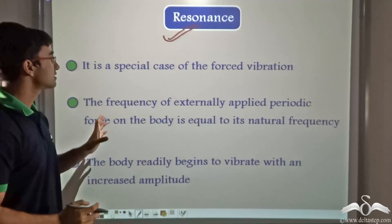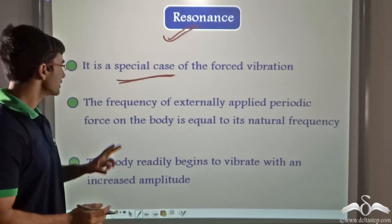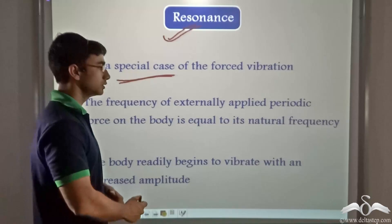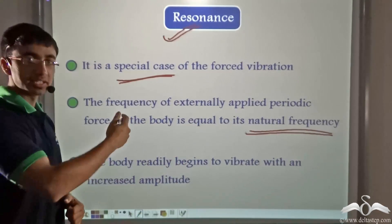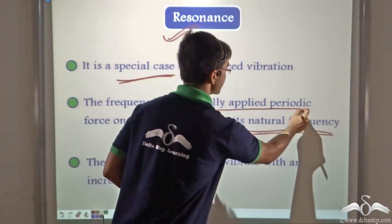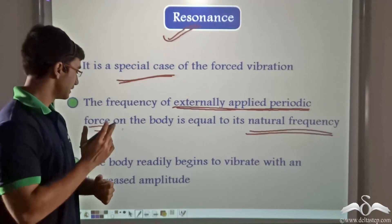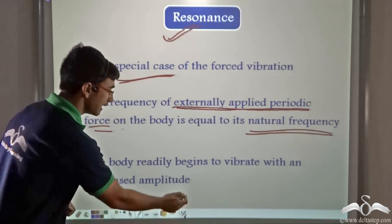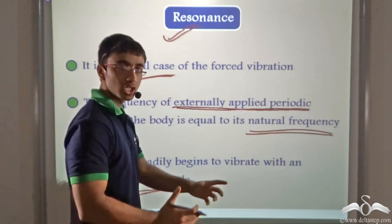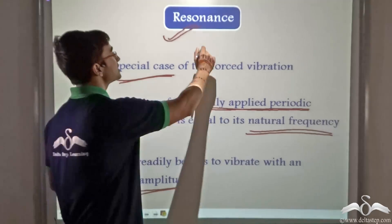What is resonance? Resonance is a special case of forced vibration — that is the first and foremost condition. Secondly, for resonance to occur, the frequency of the externally applied periodic force has to be equal to the natural frequency of the vibrating body. In the previous case, resonance occurred in the swing because the boy applied an external periodic force whose frequency matched the natural frequency of the swing. Lastly, the body readily begins to vibrate with an increased amplitude. So whenever the frequency of the externally applied periodic force matches the natural frequency of the body, the body vibrates with an increased amplitude — and this phenomenon is termed resonance.